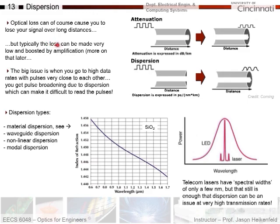Now, typically we can make the optical loss really low, and we can boost it by amplification. We'll talk more about that later. So the big issue is when you go to really high data rates with the pulses very close to each other, you get a problem due to dispersion where you've got the pulses like this, but then they broaden out and they start to overlap.